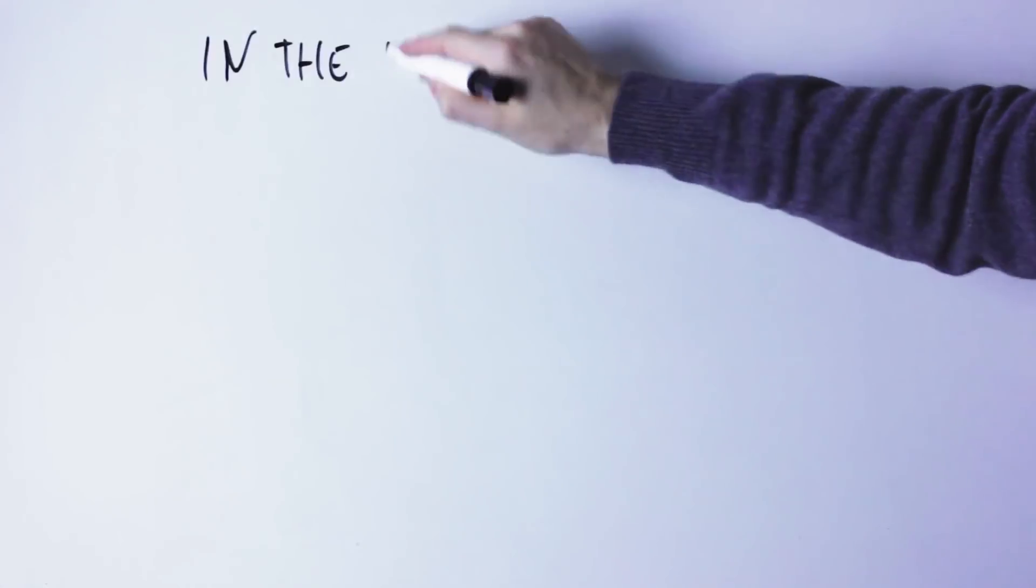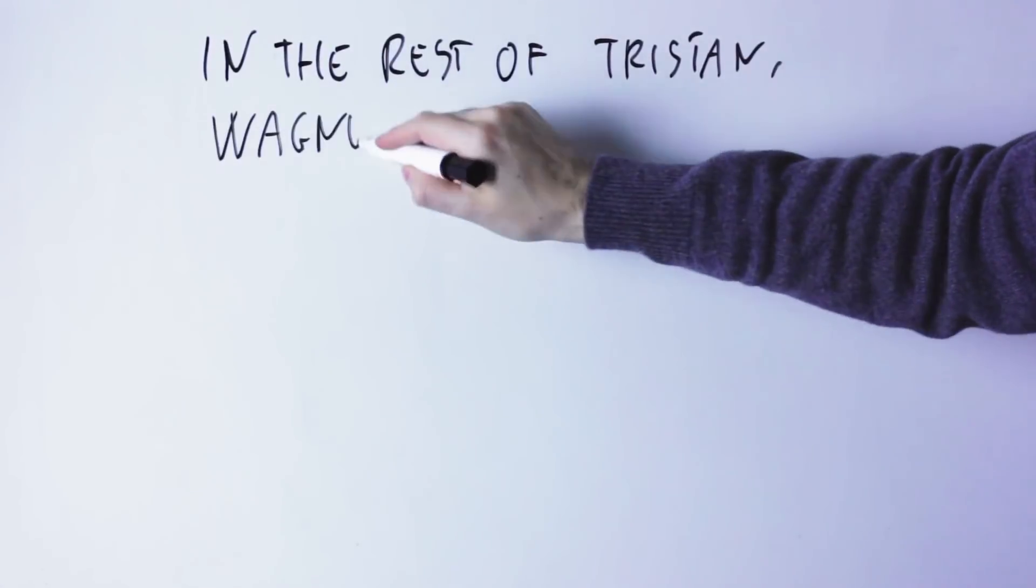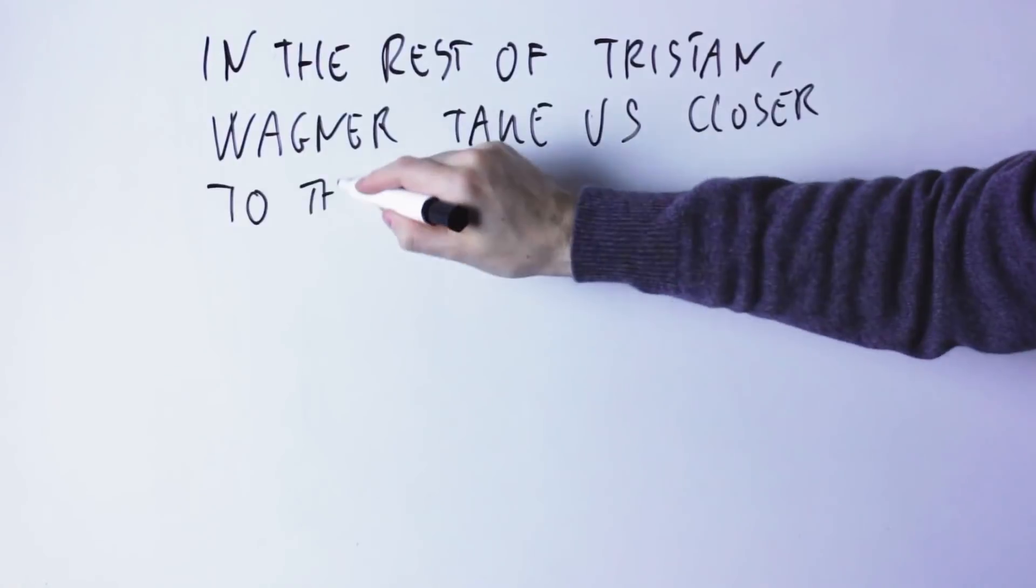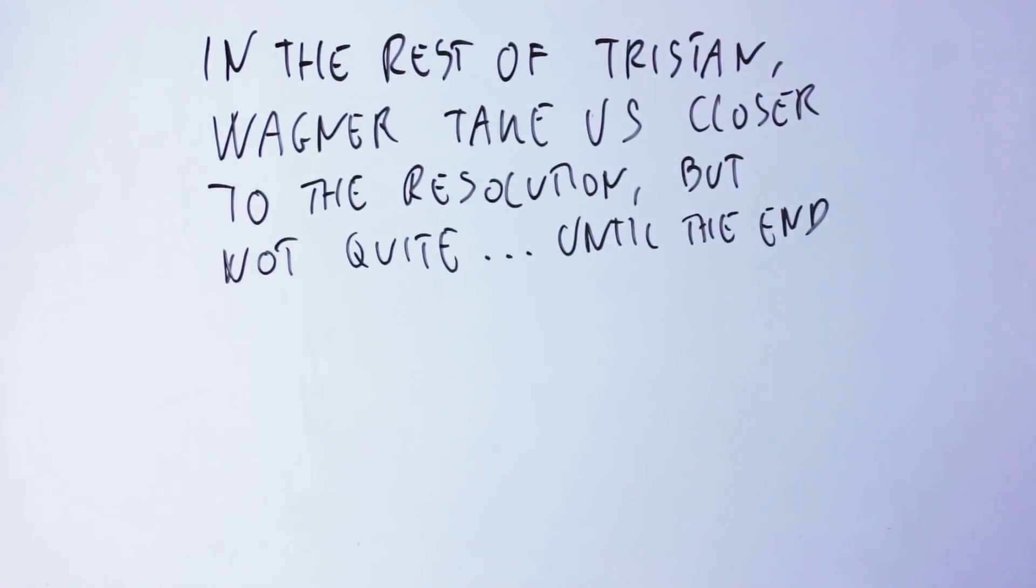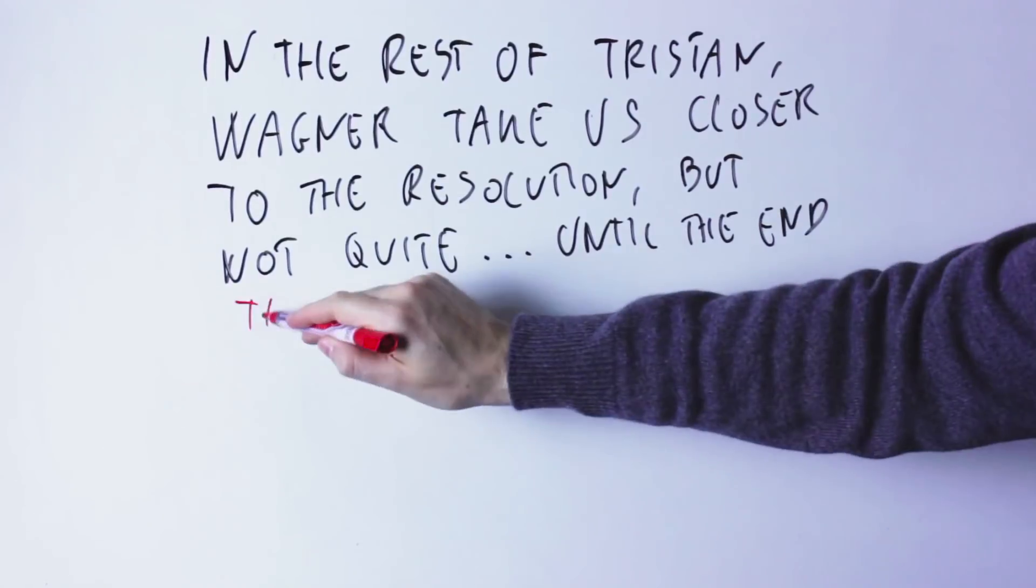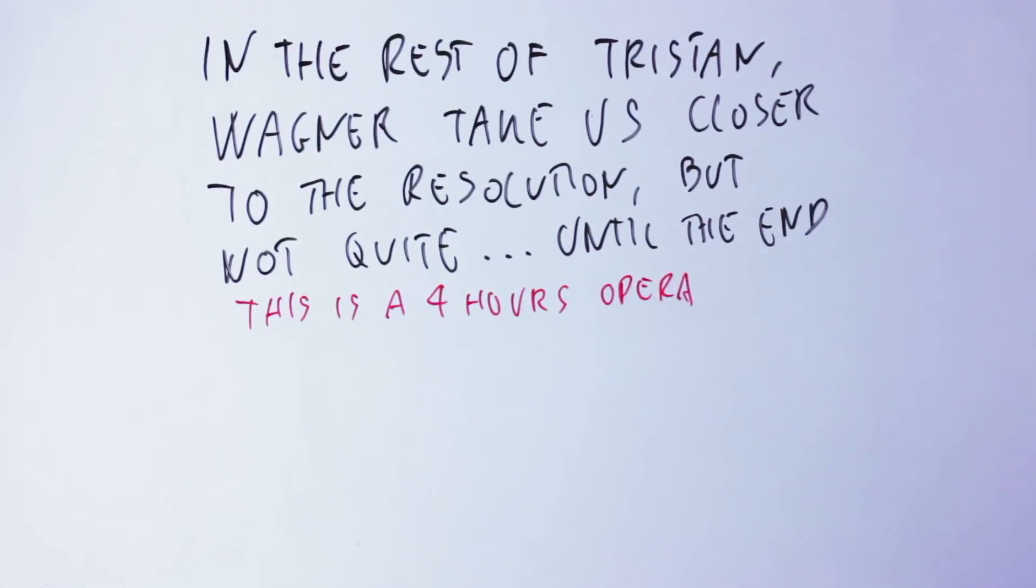Now, what Wagner will do in the rest of Tristan und Isolde is that he will play getting close to the resolution of the Tristan chord and the fifth chord of the key, but he will never actually resolve it until the very end of the opera.